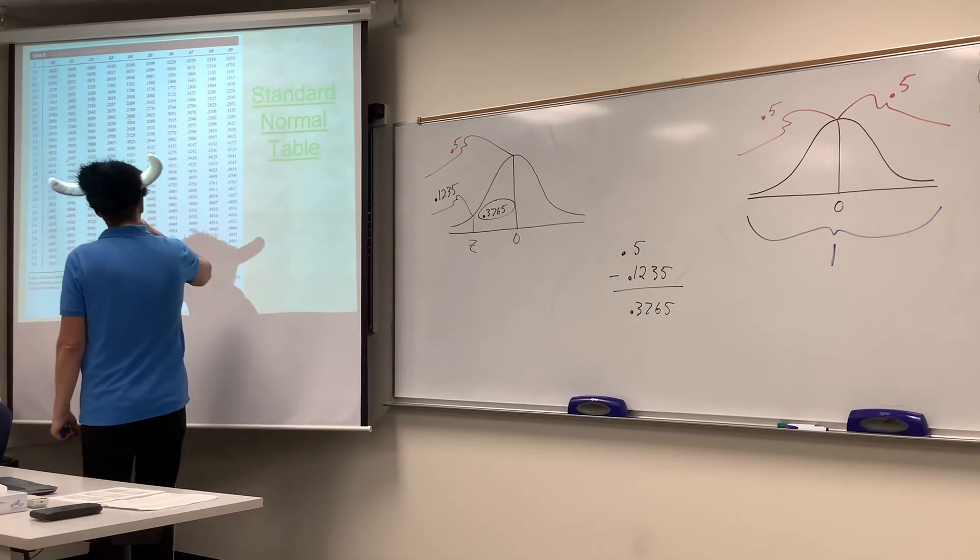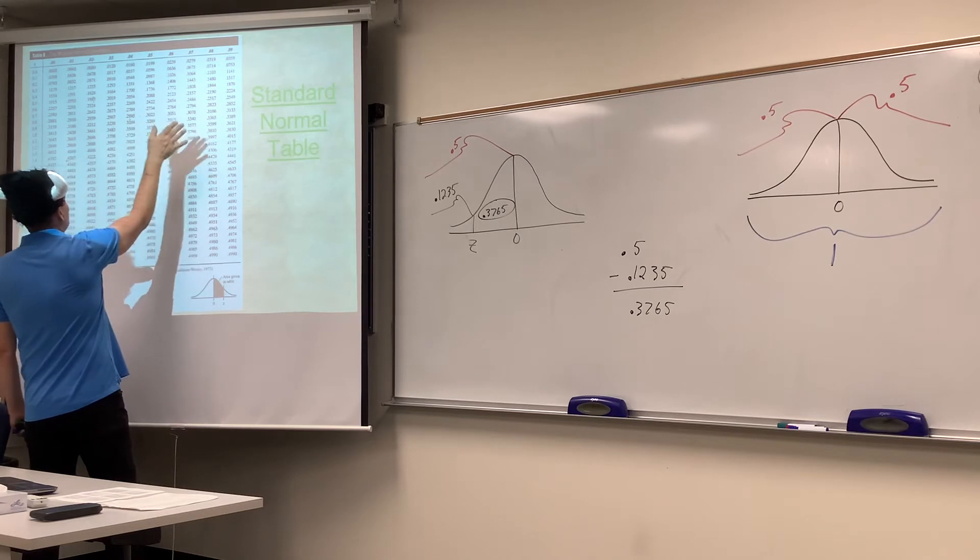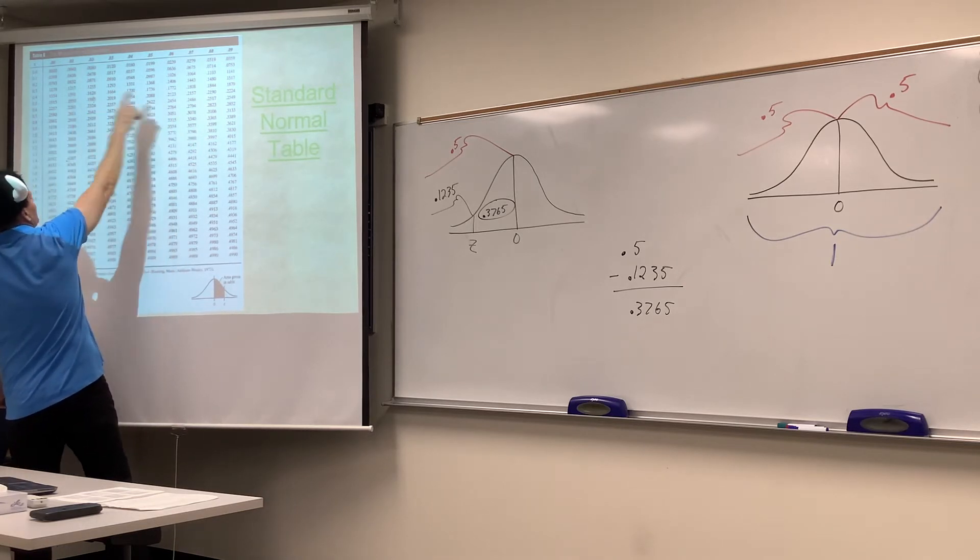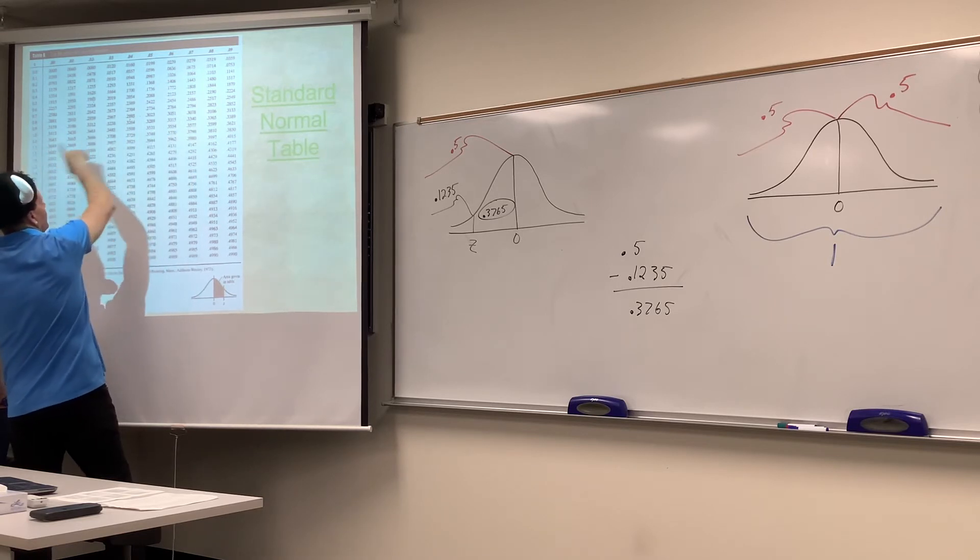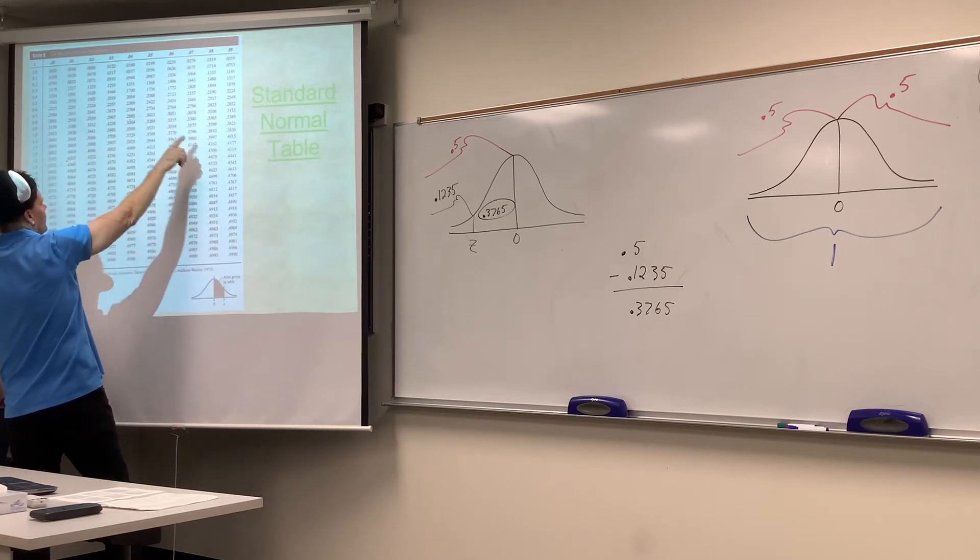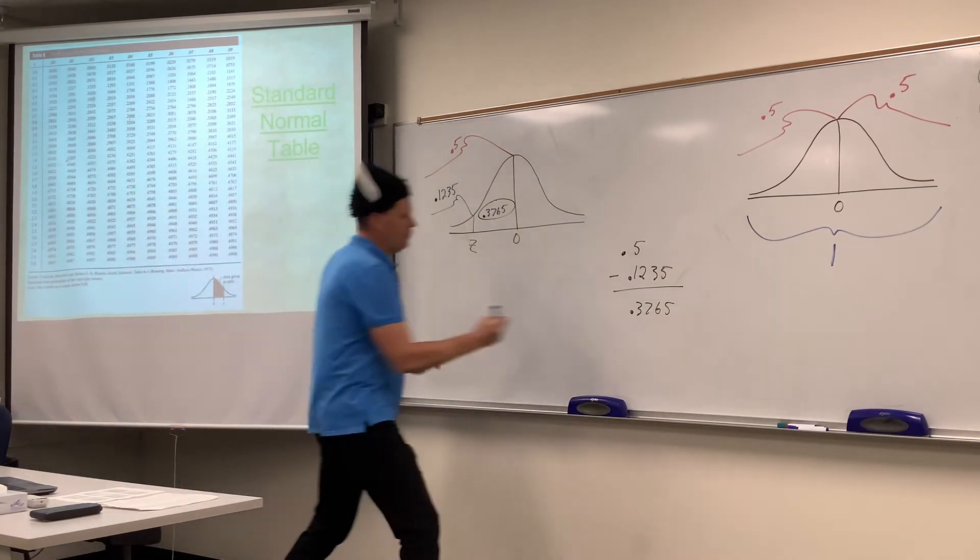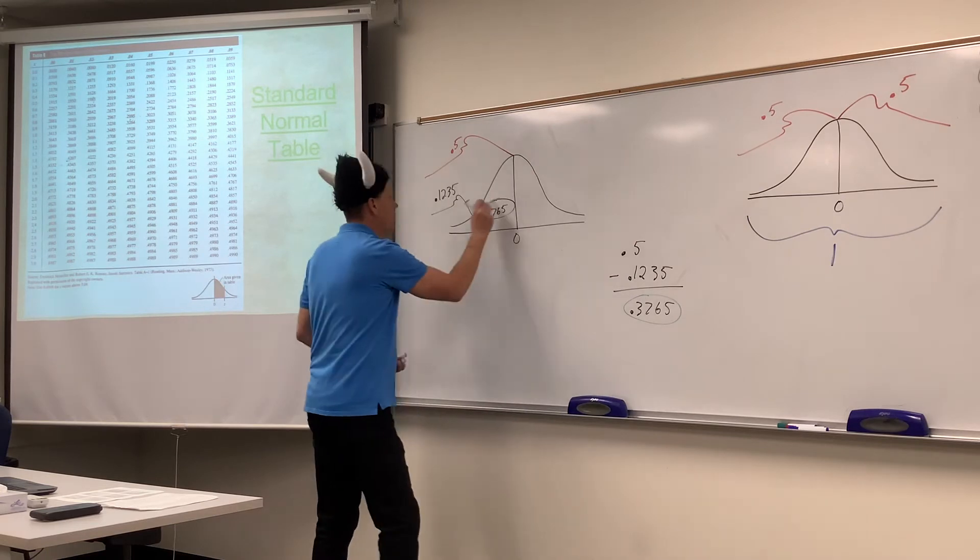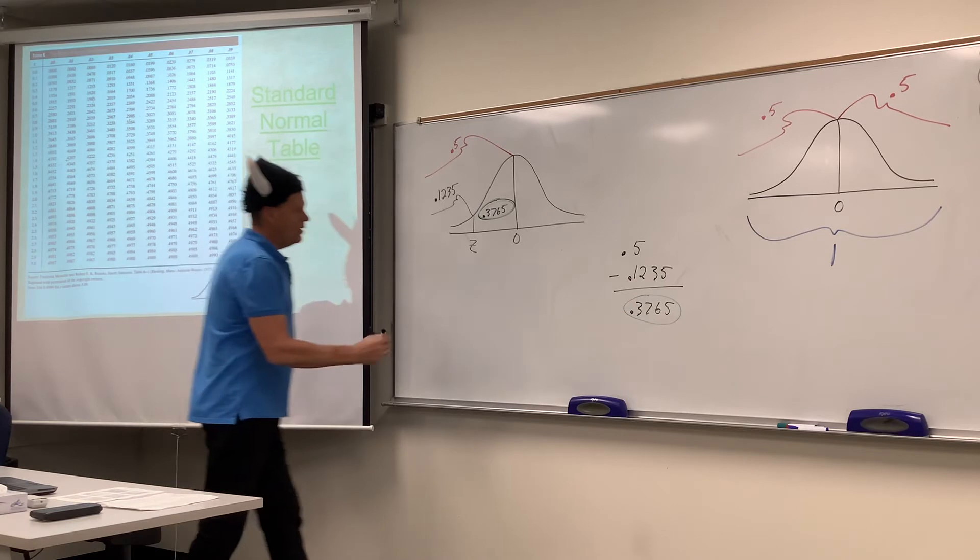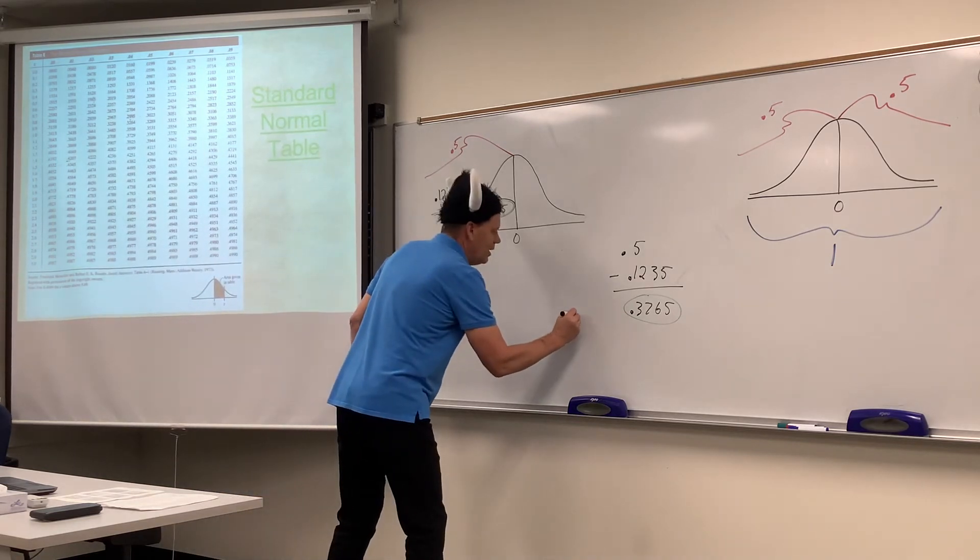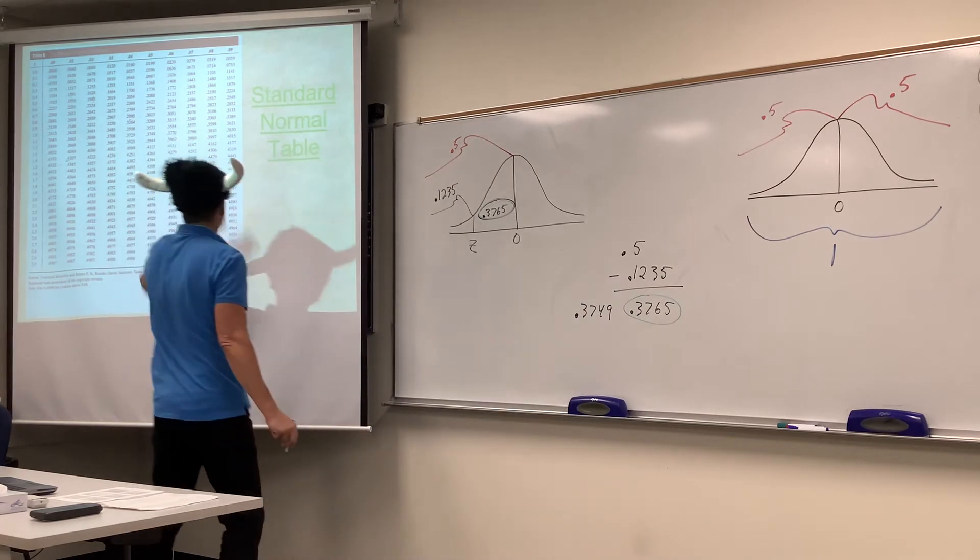And if we look through here, now here's a deal that we haven't seen yet. If you look through the body of this table, by the way, the numbers get progressively larger if you read it like a book, because as the z-scores get larger, the areas get larger right along with it. But you'll notice here that our number, our middle sliver of 3765 isn't in the body of the table. I'm noticing that the numbers that surround it are 0.3749, that's in the body of the table, and then 0.3770.